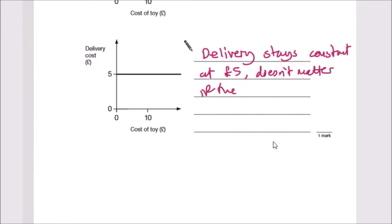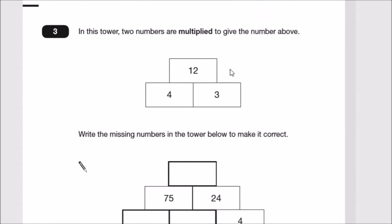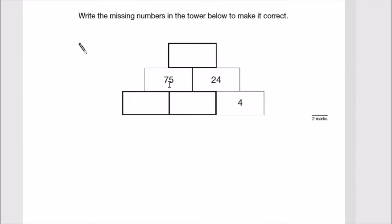Number three: In this tower, two numbers are multiplied to give the number above. In this multiplication tower we can see that 4 times 3 is 12, or 12 divided by 4 is 3, or 12 divided by 3 is 4.